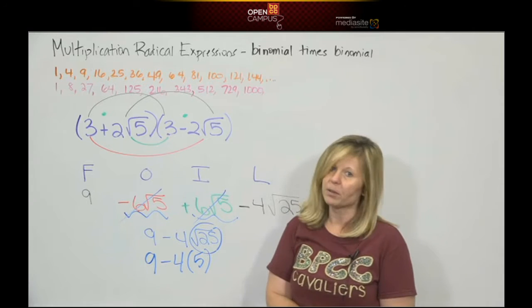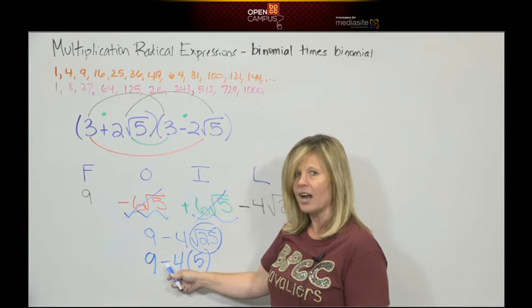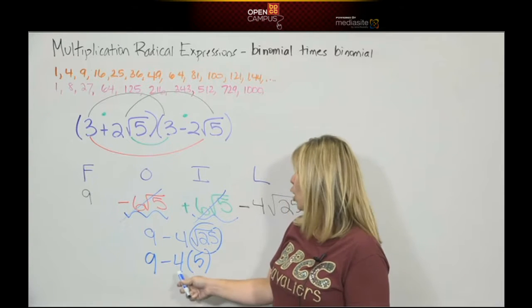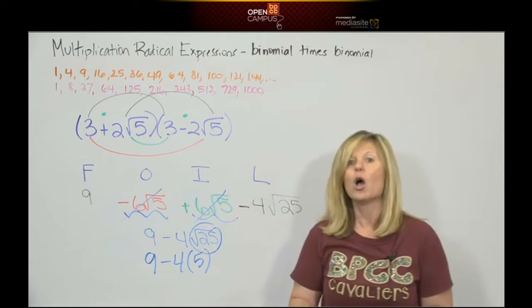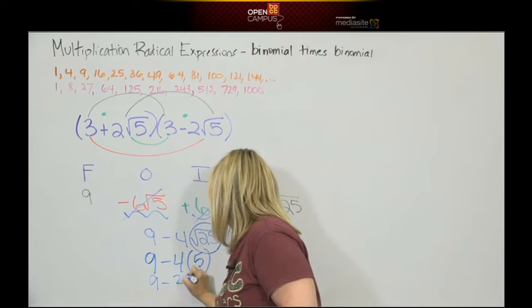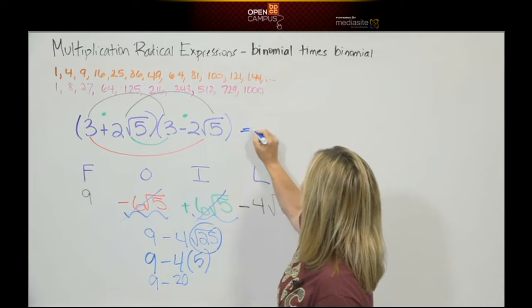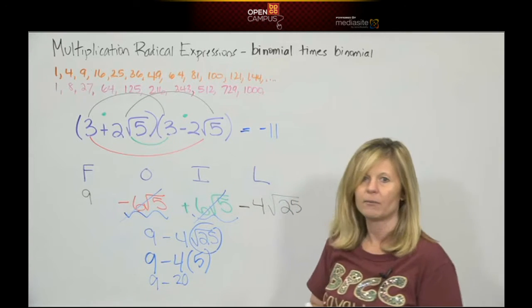So now this becomes 9 minus 4 times 5. So, again, according to please excuse my dear Aunt Sally, order of operations, do we subtract the 9 and 4 first, or do we multiply the 4 and 5? We multiply. So this becomes 9 minus 20, and 9 minus 20 means this answer is negative 11 for the product.